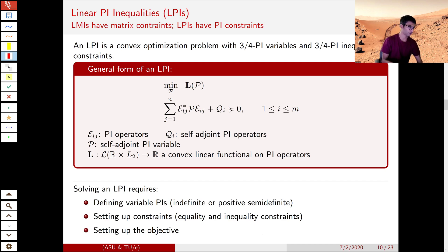We call such optimization problems as LPIs. They essentially have PI variables or inequalities or both. They can have an objective function and they can have known or unknown PI operators.